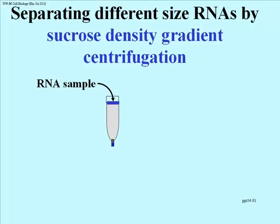We can separate different RNAs by differences in size using sucrose density gradient centrifugation. You have a plastic tube in which a gradient of sucrose is set up. Sucrose is highly soluble in water — you can make a 40% sucrose solution by dissolving 40 grams in 100 milliliters of water. The bottom of the tube has high concentrations of sucrose, gradually decreasing towards the top. Under centrifugal force in an ultracentrifuge, a sample of RNA molecules layered on top will move through the gradient and experience increasing resistance as it encounters sucrose of higher concentration.